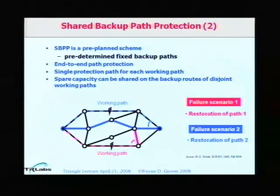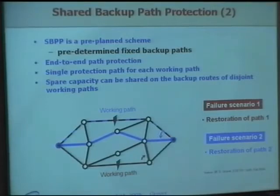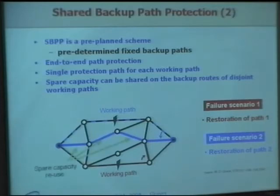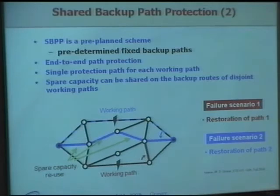In shared backup path protection, you have a working path and a pre-arranged backup path — which at first sounds like 1+1. But the key idea is you take advantage of the fact that some paths have no failures in common, so for single-failure scenarios they'll never need a shared resource on the backup path simultaneously. You can have backup paths for each that share some resources. The sharing efficiency is that a single spare channel can play a role in three different single-failure scenarios.